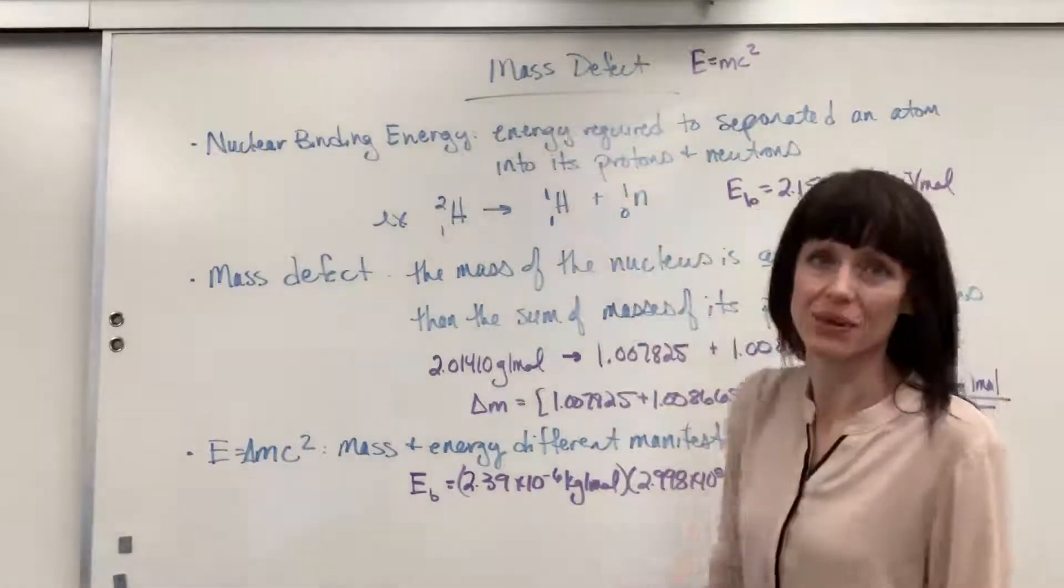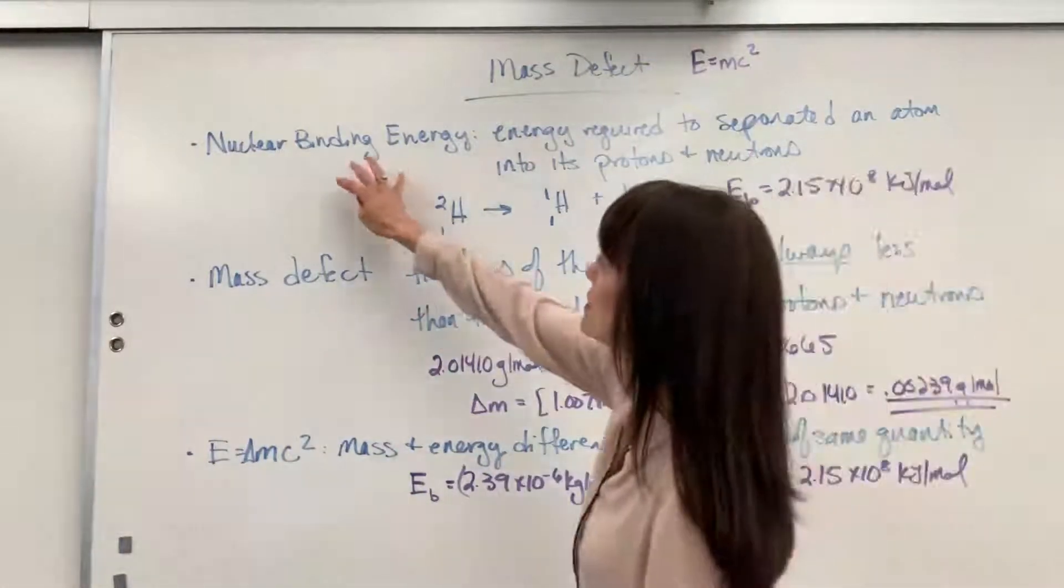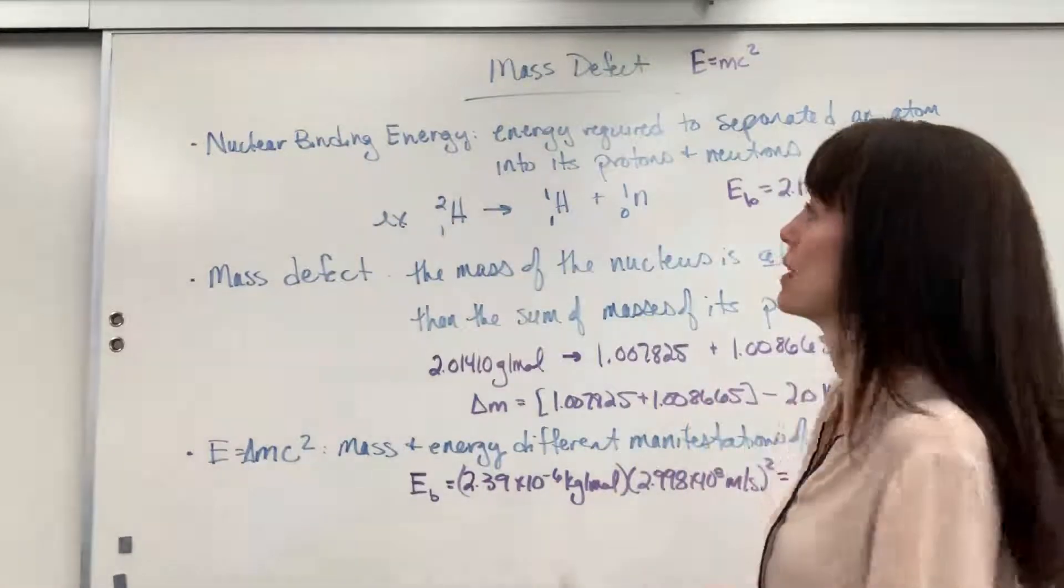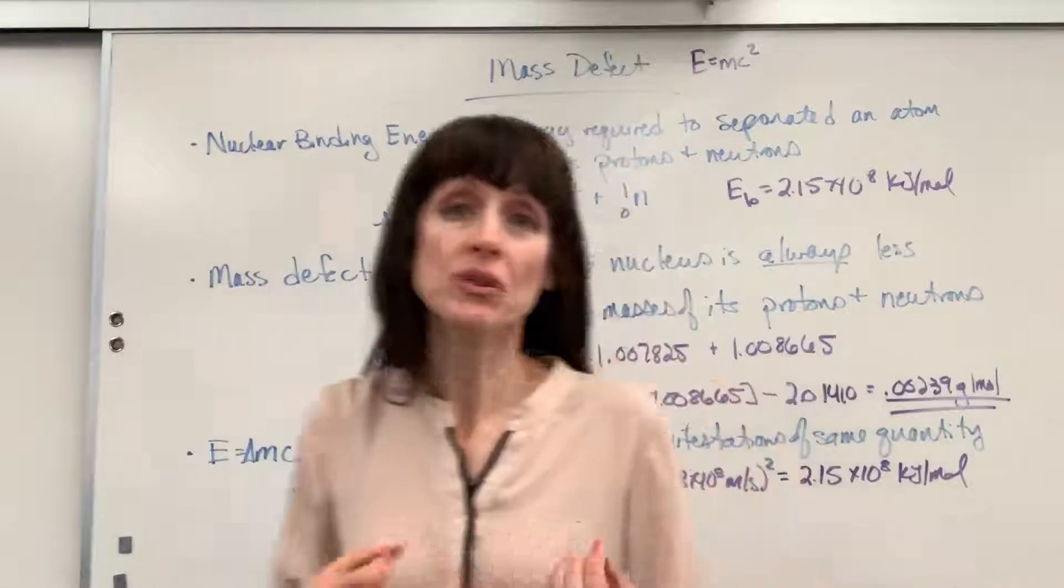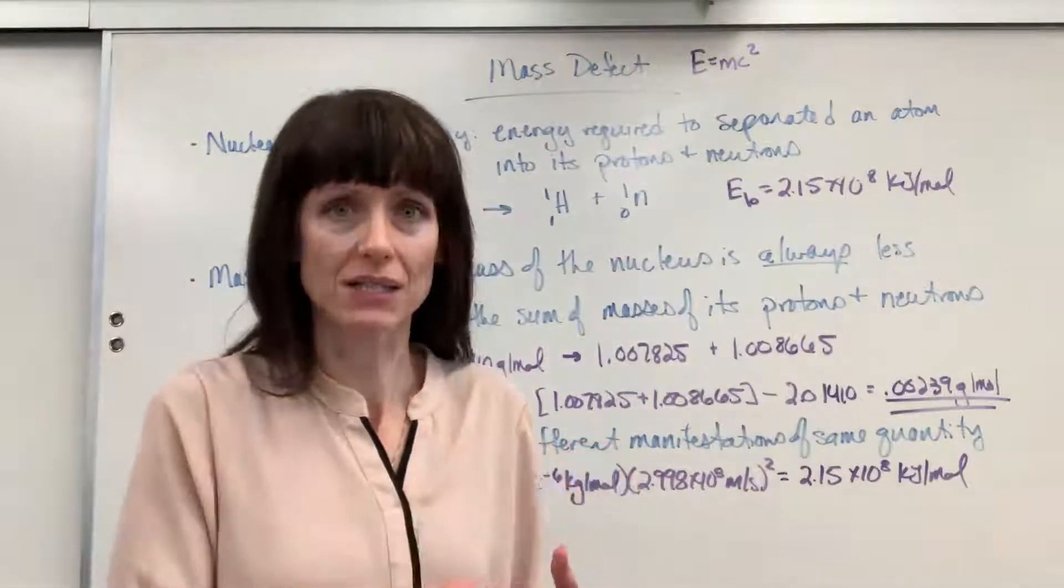This is called mass defect that we're going to talk about. Let's first jump into this vocabulary word, the definition of nuclear binding energy. This is the energy required to separate a nucleus into its respective protons and neutrons.